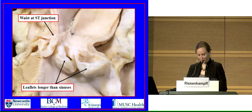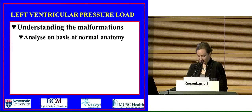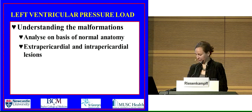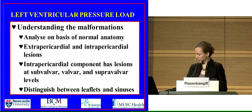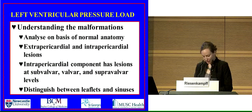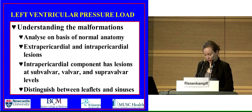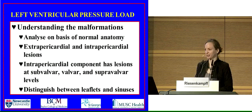This completes our journey and we will now summarize. Knowledge of normal anatomy is obviously a prerequisite for understanding the abnormalities. We need to recognize that there are intra- and extrapericardial compartments; the intrapericardial component has lesions at subvalvar, valvar and supravalvar levels; and we need to distinguish between leaflets and sinuses. To close with Robert Anderson's words, he asks us all not to use the word 'cusp,' since it is suitable for describing the surface of the molar and premolar teeth but useless when describing the heart. Thank you for your attention.